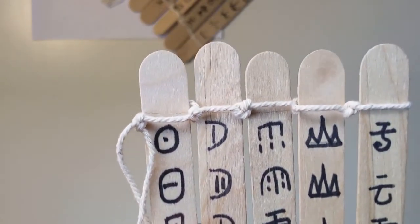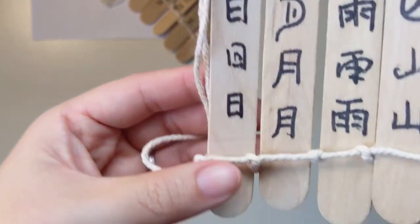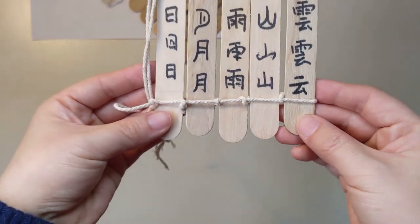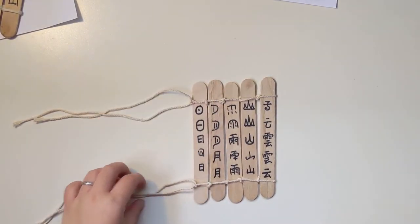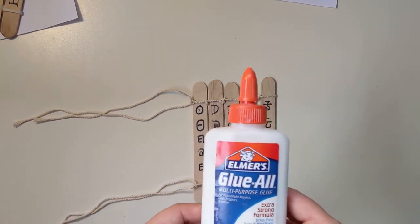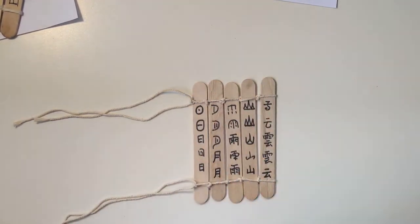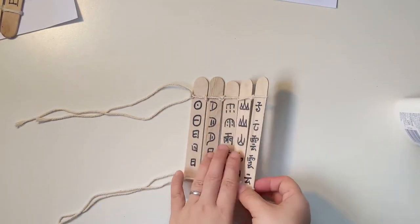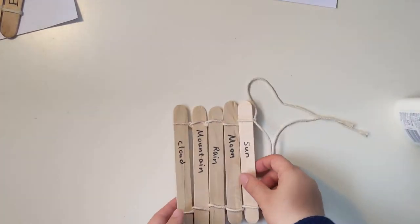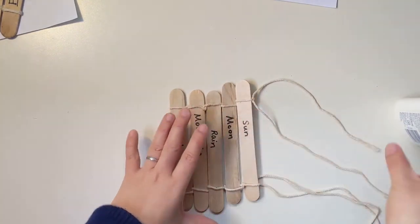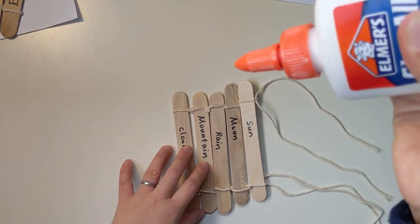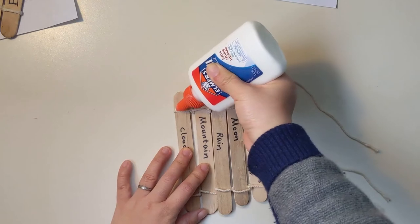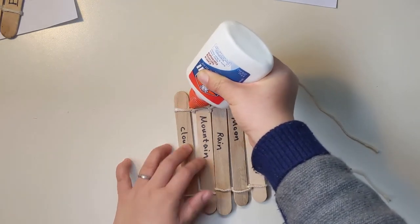If you have difficulties tying the knot, you can ask an adult to help you. Once you've finished connecting the slats together with two strings, we are going to use the liquid glue to secure our strings. You can flip over and squeeze the glue and apply the glue along the string.